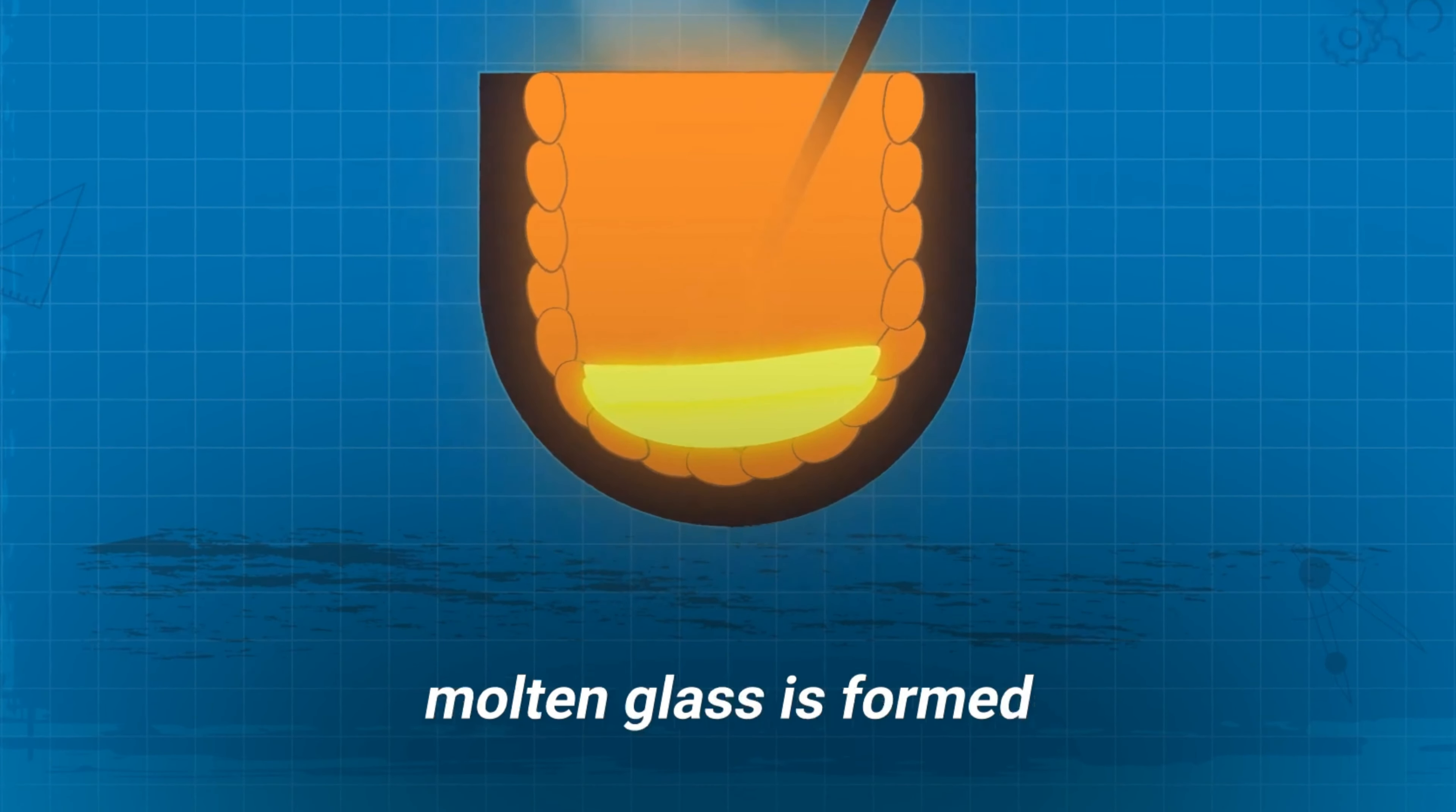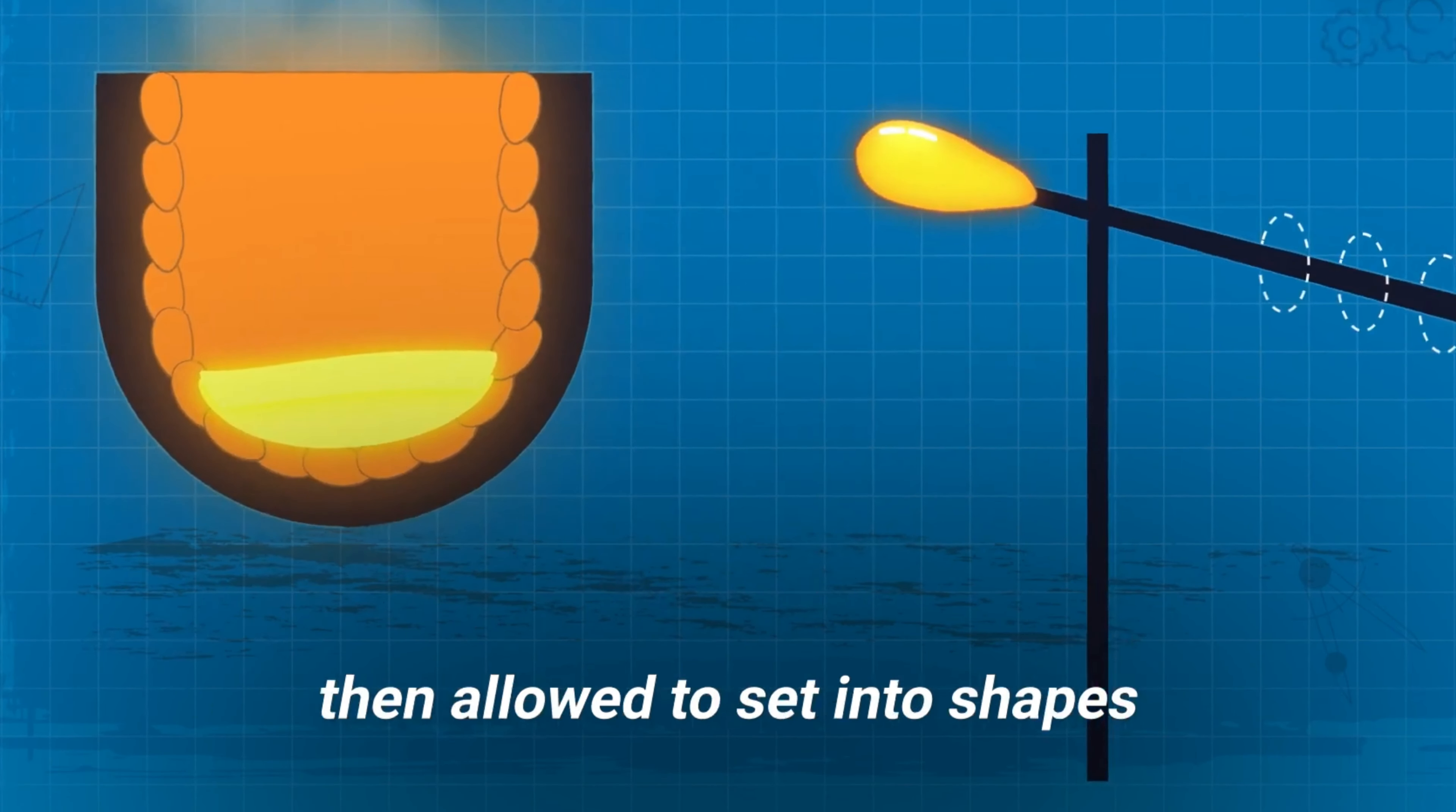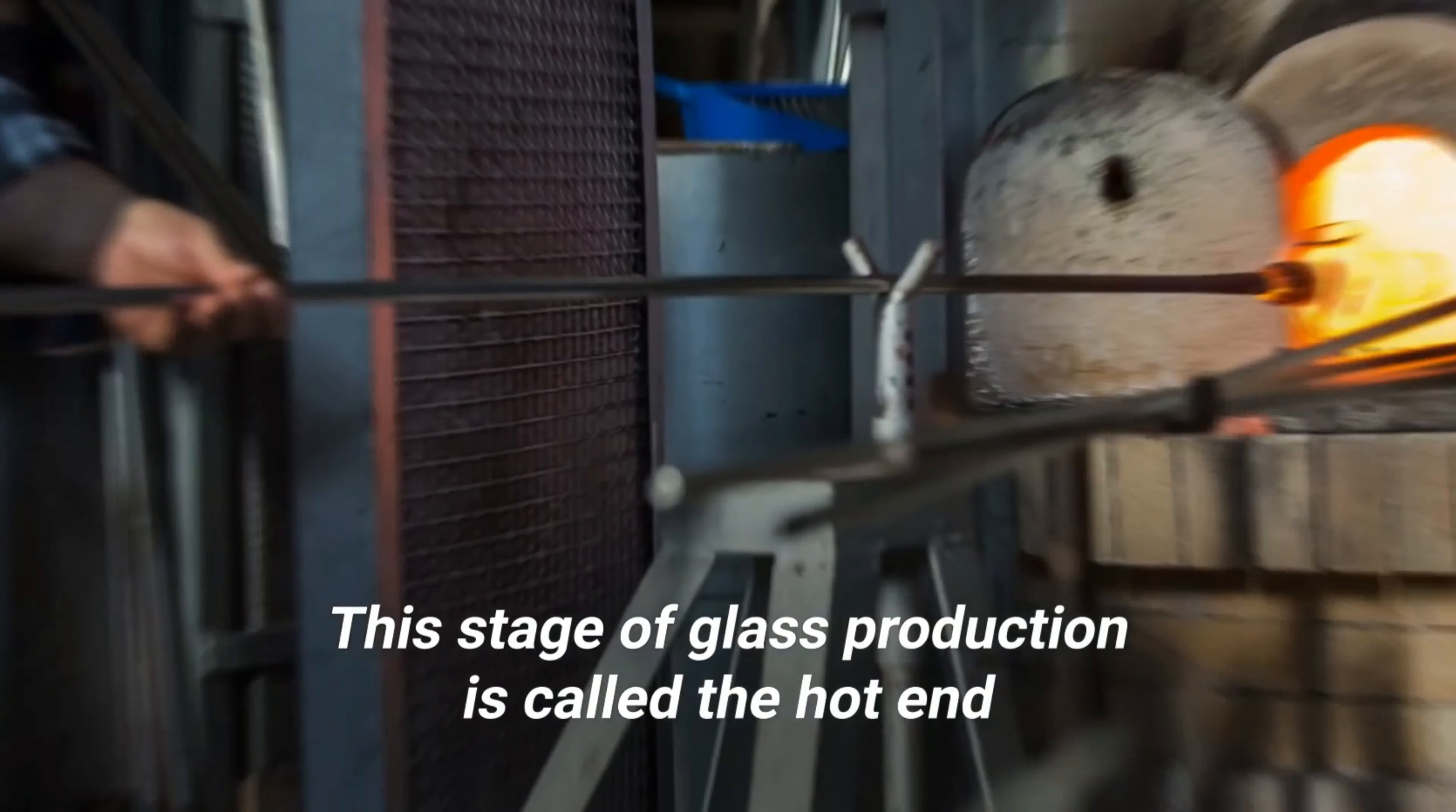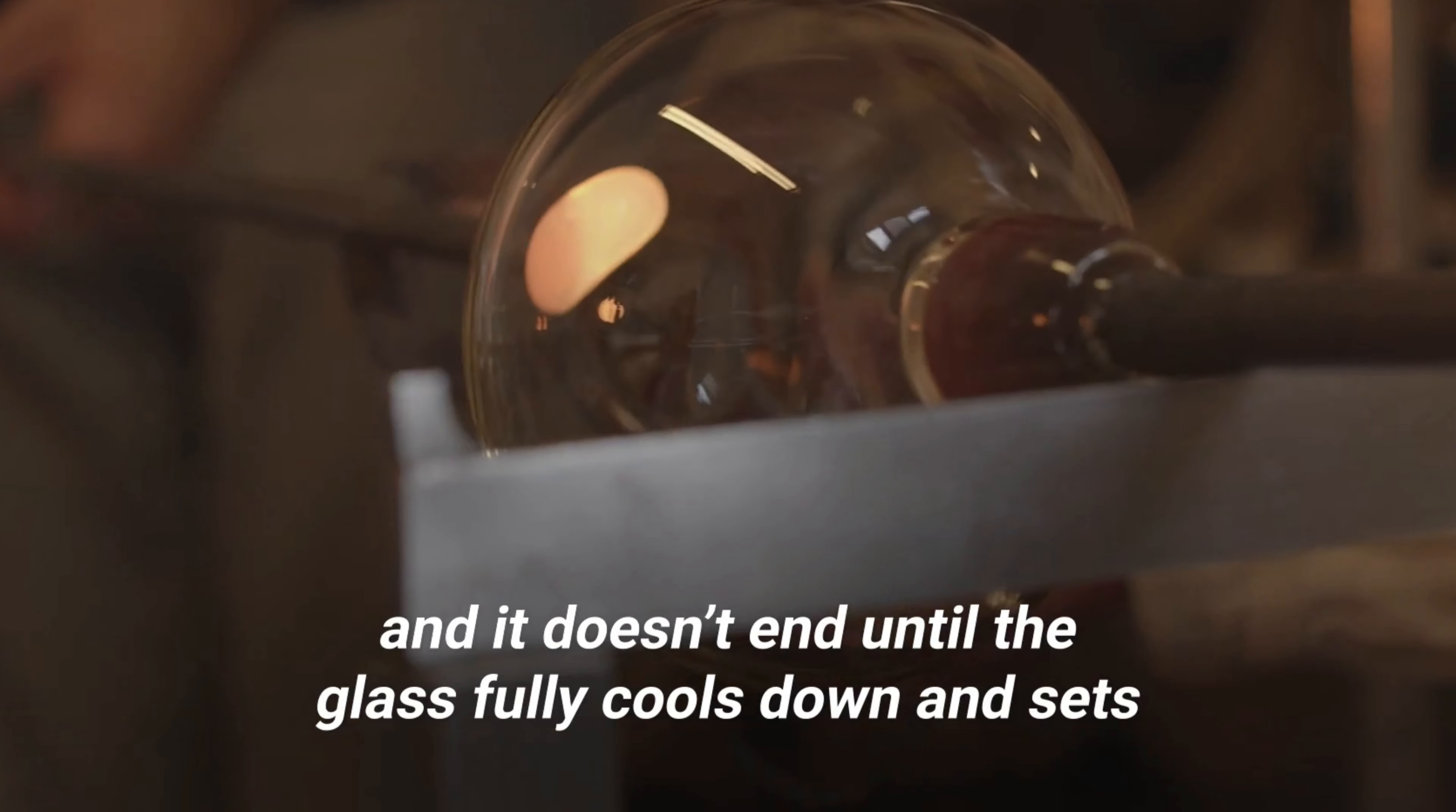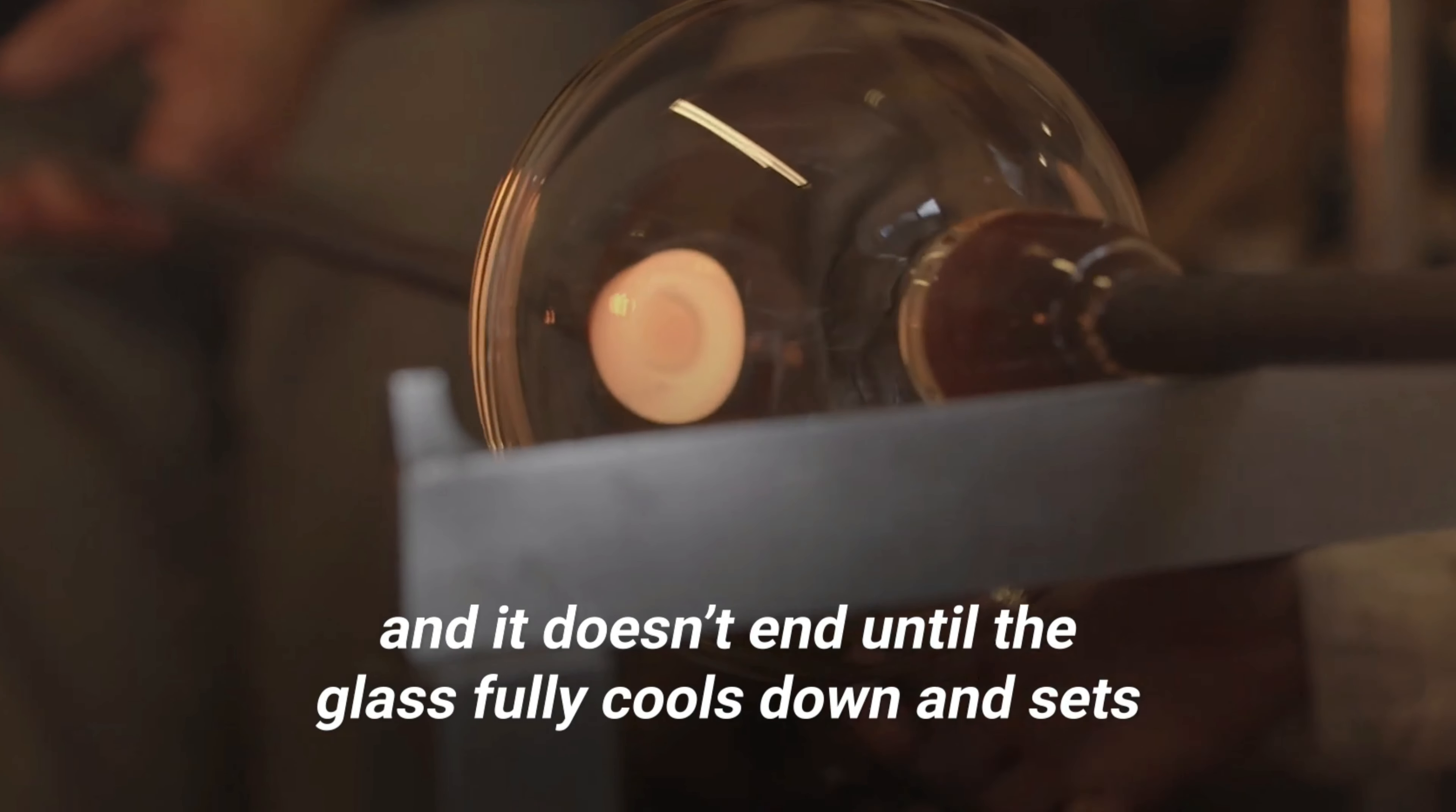Before it hardens, molten glass is formed, then allowed to set into shapes. This stage of glass production is called the hot end, and it doesn't end until the glass fully cools down and sets.